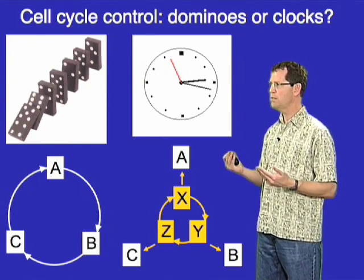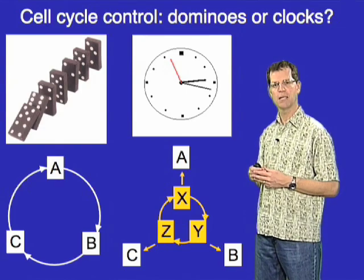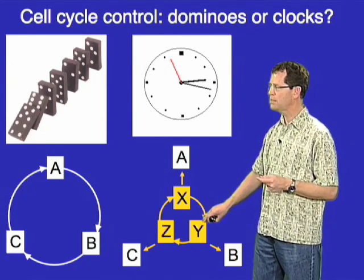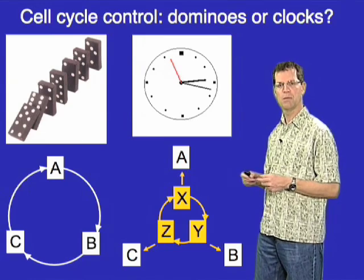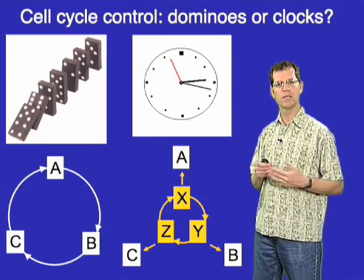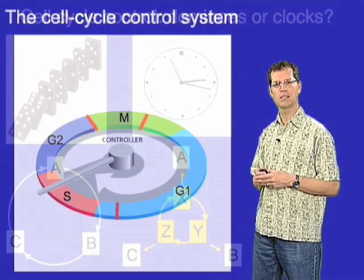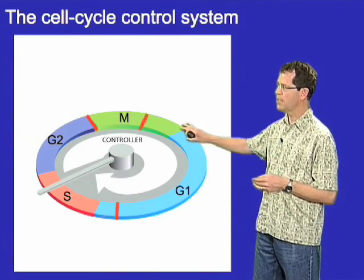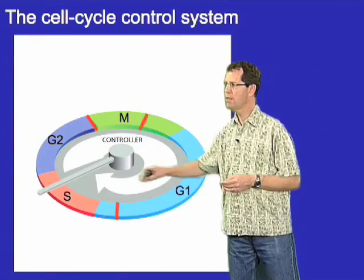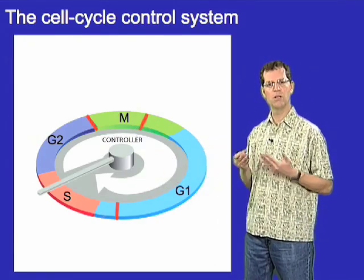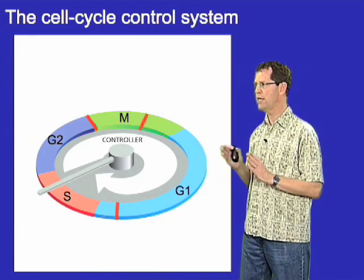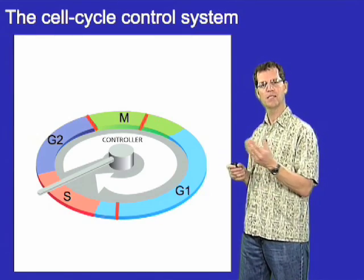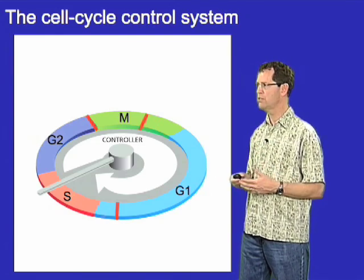How do we reconcile these two different models? The answer turned out to be that both were at least partially correct. There is indeed an intrinsic biochemical timer in all eukaryotic cells that guides the cell through the cell division cycle. But in many cells, the events of the cell cycle can feed back to that timer and adjust the timing of later events if early events fail for one reason or another. The basic idea is that the eukaryotic cell cycle is governed by this intrinsic biochemical timer — essentially a series of biochemical switches that turn on specific cell cycle events in a specific order — but that timer can be regulated so that cell cycle events can feed back and send information to arrest progression through certain stages if necessary.